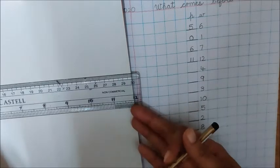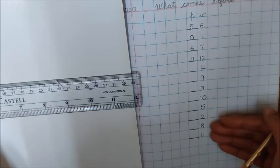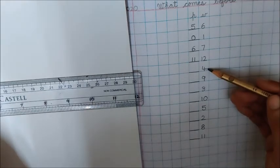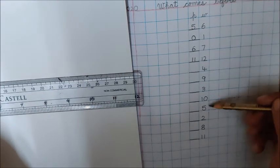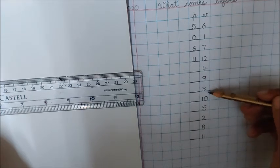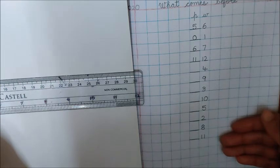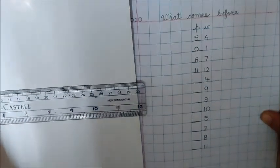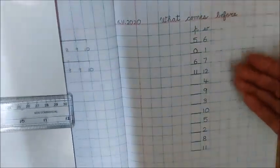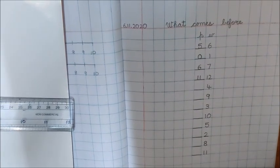So, now you have understood how to use number line. So, all these numbers you are going to do yourself. Look at the number line and find the answers. What comes before 4, before 9, before 3, 10, 5, 2, 8, 11. Complete your work. And then, remember to send photo of this work to your class teacher. Bye children. Take care.